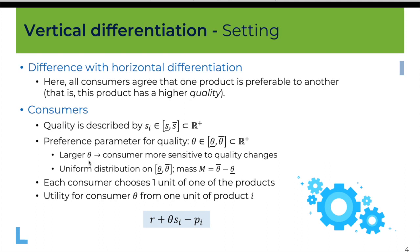Any value of theta can be taken between the two boundaries, so we assume a uniform distribution. There is a mass m of consumers equal to the difference between theta-upper-bar and theta-lower-bar. As we did in the analysis of horizontal differentiation, we assume that consumers have unit demand — they choose one unit of one of the two products and have no utility for a second unit.